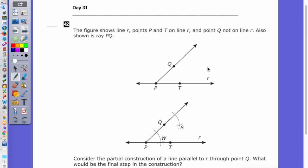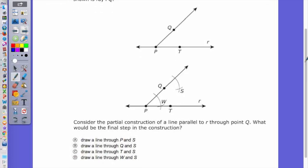Figure 42. Problem 42. The figure shows line R, points P and T on line R, and point Q not on line R. Also shown as ray PQ. Consider the partial construction of a line parallel to R through Q. What would be the final step? Well, even if you didn't know much about constructions, you would get that if it's going through Q and it's parallel, it's going to be somewhere along there, right? You are drawing a line through Q and S. So the correct answer there is B.